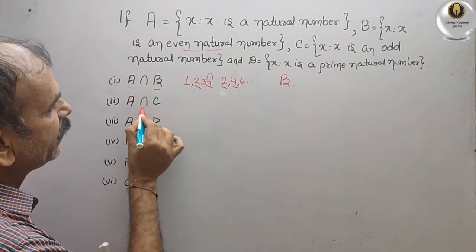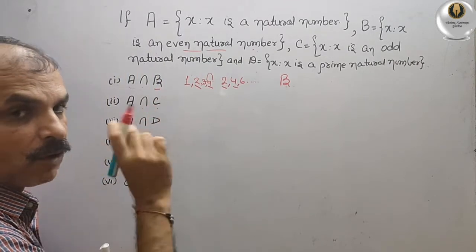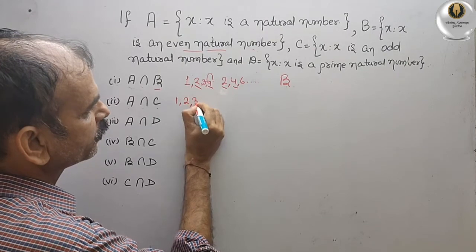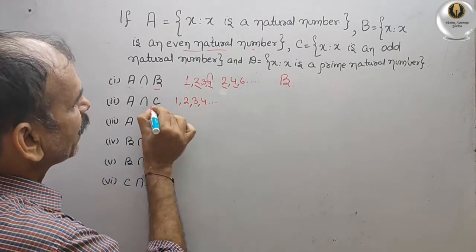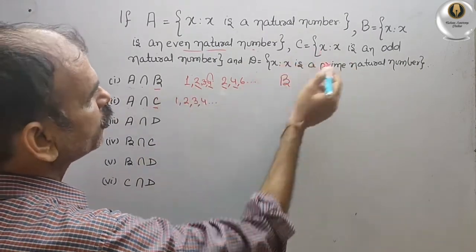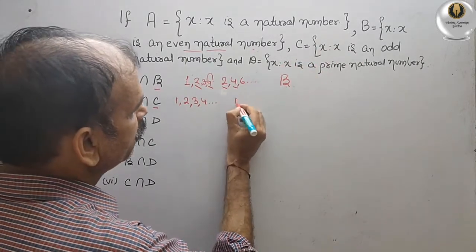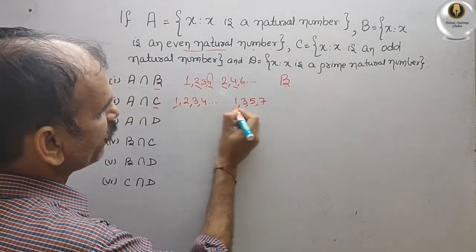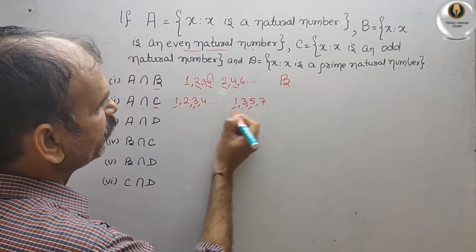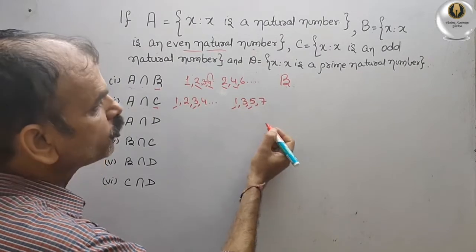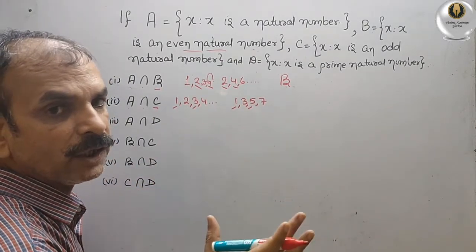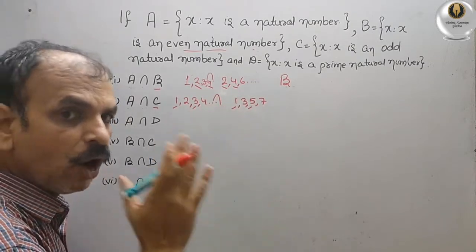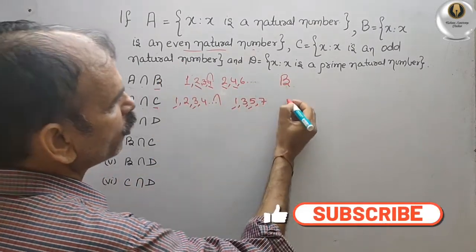Next, A intersect C. A is natural numbers: 1, 2, 3, 4 and so on. And C is odd numbers, that means 1, 3, 5, 7 and so on. You can see 1 and 1, 3 and 3, and so on. That means if you intersect, you will get only odd numbers. The odd numbers is C only.